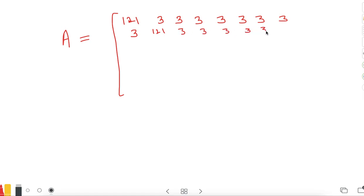Then you have 3, 121, 3, 3, 3, and 3. Then you have 3, 121, 3, 3, 3, and this is repeated to make all diagonal elements as 121 and non-diagonal elements as exactly 3.